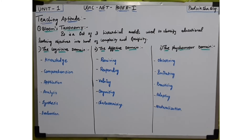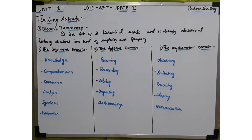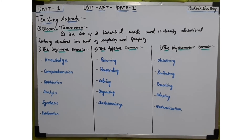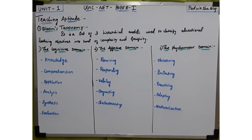The next category is responding to phenomena — the active participation of the learner. For example, participating in a group discussion. If I am a learner, I need to be an active participant. In a group discussion, if one person gives a point, the other participants also need to contribute their points — that is responding to phenomena.